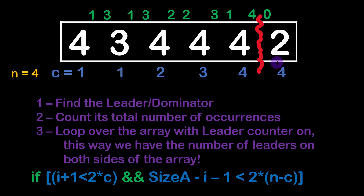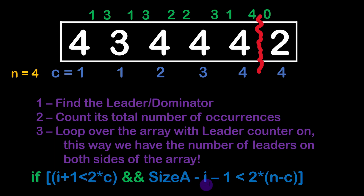The second condition checks whether the right side also has a leader. We check if the size of the whole array minus (i + 1) — the number of elements on the right side — is less than twice the number of right-side leader occurrences, which is n minus c. If twice this value is greater than the number of right-side elements, we have a leader on the right side too, meaning we have an equileader position.